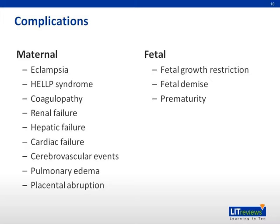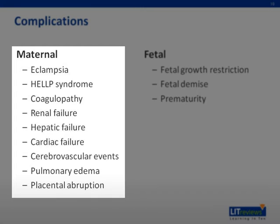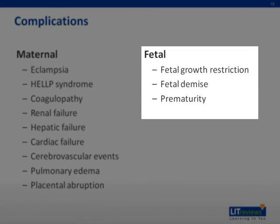Complications of preeclampsia can be divided into maternal and fetal complications. Maternal complications include eclampsia, HELLP syndrome, coagulopathy, renal failure, hepatic failure, cardiac failure, cerebrovascular events, pulmonary edema, and placental abruption. Fetal complications include fetal growth restriction, fetal demise, and prematurity.